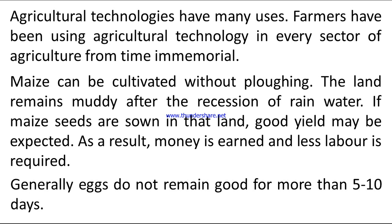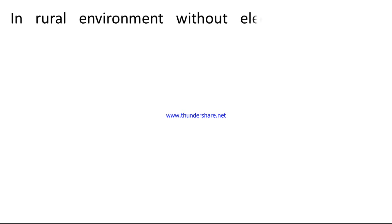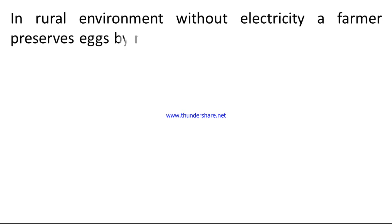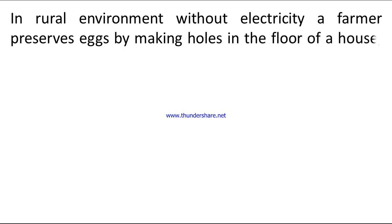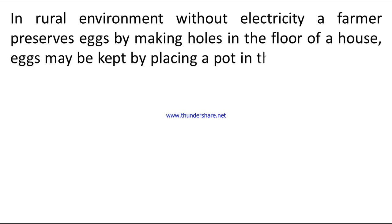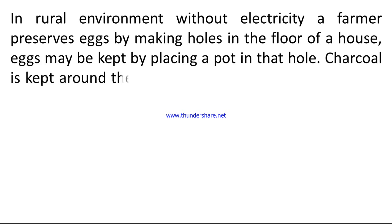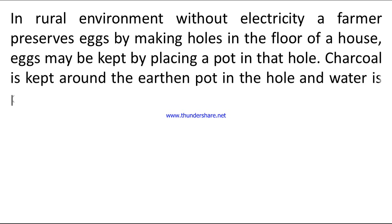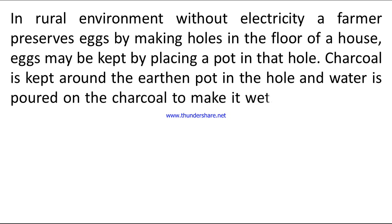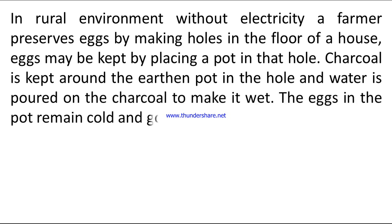Answer 5: Generally, eggs do not remain good for more than five to ten days. In a rural environment without electricity, a farmer can preserve eggs by making a hole in the floor of a house. Eggs may be kept by placing a pot in that hole. A circle is kept around the earthen pot in the hole and water is poured on the circle to keep it wet. The eggs in the pot remain cold and good for 20 to 50 days.